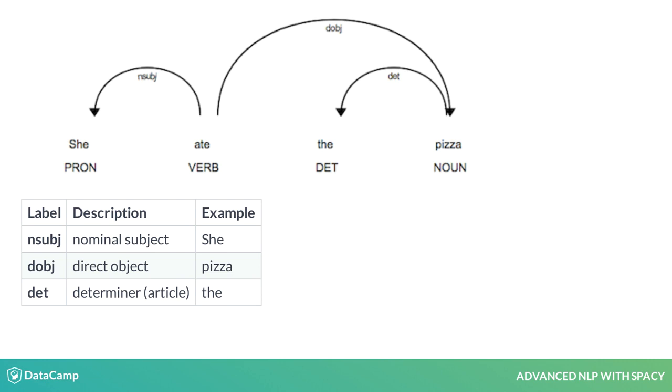The noun 'pizza' is a direct object attached to the verb 'ate' — it is eaten by the subject, 'she.' The determiner 'the,' also known as an article, is attached to the noun 'pizza.'